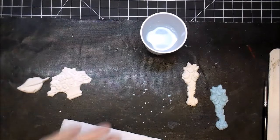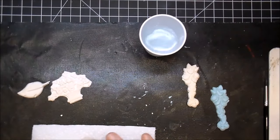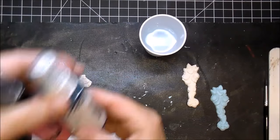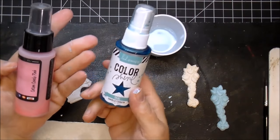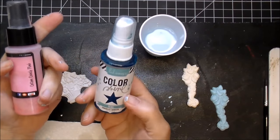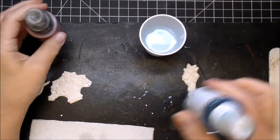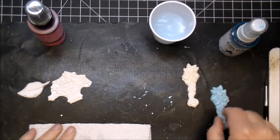And the next thing I'd like to show you, you can use sprays. I have Lindy Stamp Gang in Cotton Candy Pink, and I have Heidi Swapp's Color Shine in Teal. You can spray them if you'd like or paint them on.